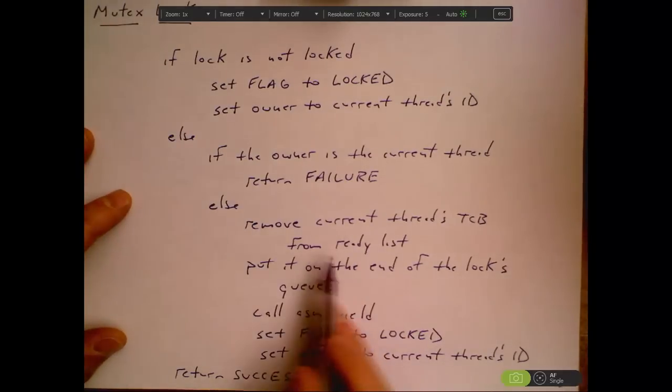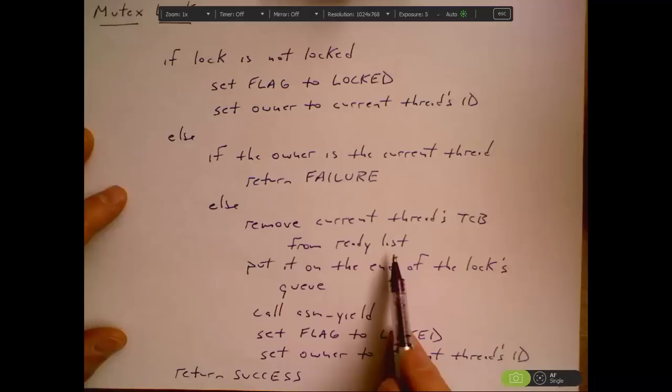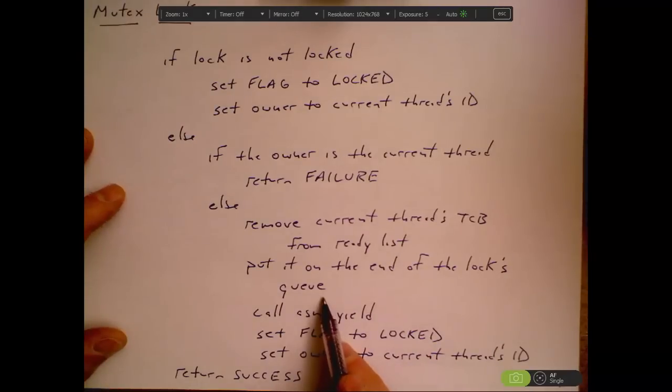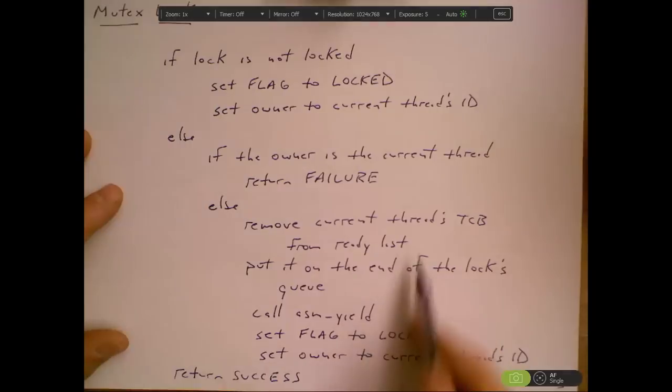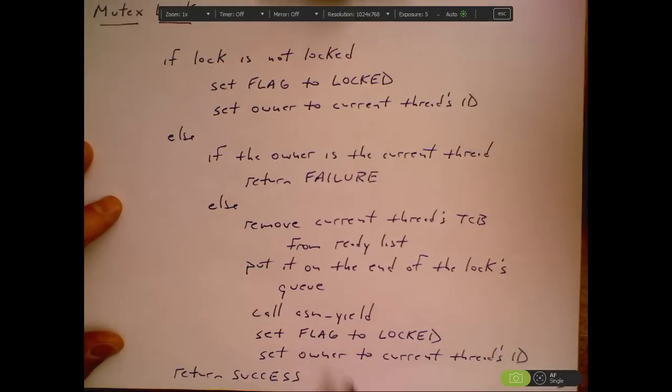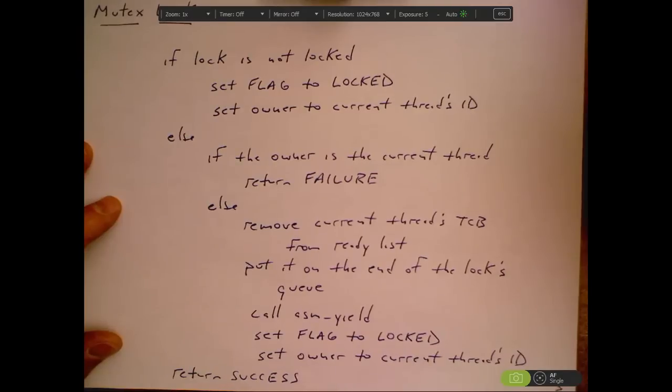The key things are in here. If we have to wait for the lock, we pull ourselves off the ready list, we put ourselves on the end of a queue, and then we call the ASM yield to let somebody else run. That's how you do blocking. When we wake back up, we're ready to grab the lock and continue.